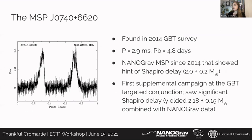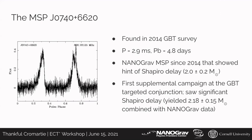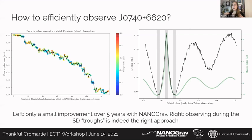J0740+6620 was found in 2014 and is a fairly normal millisecond pulsar. NANOGrav has been timing it since 2014, and after a few years of observations it started to show a hint of Shapiro delay, but our constraint was really poor. We decided to conduct targeted observations using the Green Bank Telescope — doing a long scan over conjunction to yield a better mass measurement. That supplementary observation combined with the NANOGrav dataset yielded a mass of 2.18 ± 0.15 solar masses, but we needed a better measurement than that.